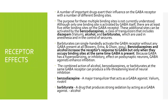At receptor sites, the actual transfer of neurotransmitters happens. A number of important drugs exert their influence on the GABA receptors, which have a number of different binding sites. GABA is responsible for producing calmness and is given to persons with anxiety and panic attacks.